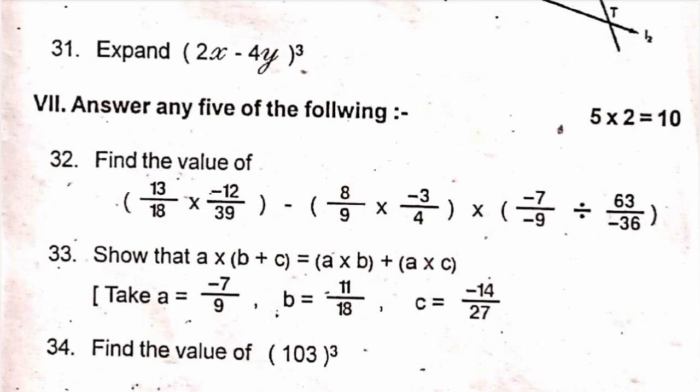35, simplify. First one, 5y plus 1 into 5y plus 2 into 5y plus 3. Then second, p minus 2 into p plus 1 into p minus 4.